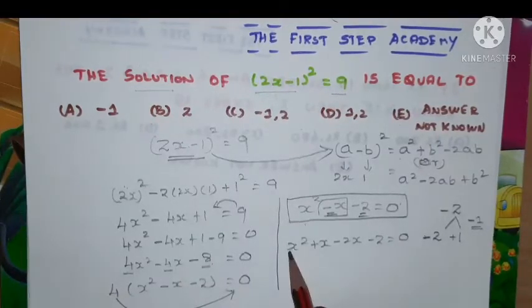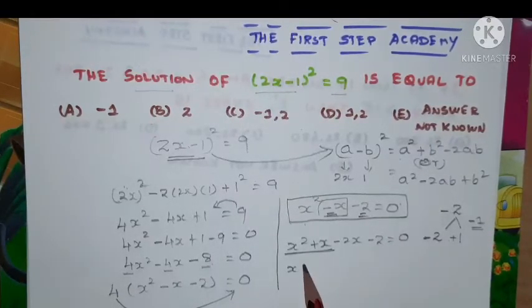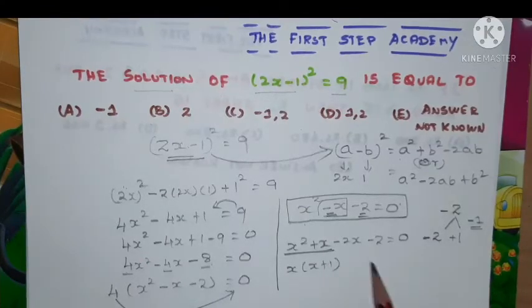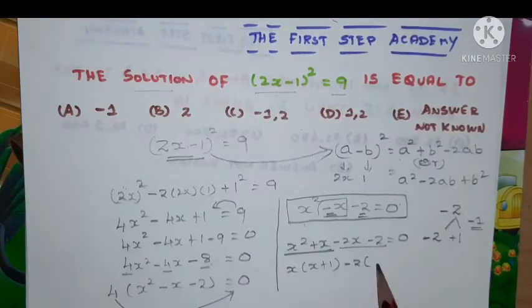Further look at these two terms. So x is common, I have taken outside, so x(x+1). In these two, minus 2 is common I have taken outside, so -2(x+1) = 0.